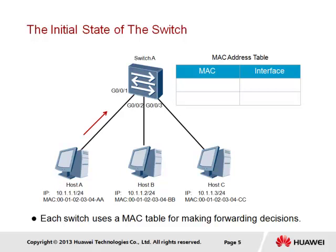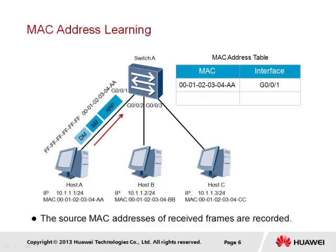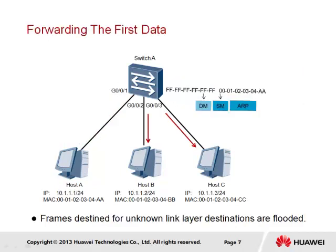Host A has begun to forward a frame heading for switch A. The frame that has been broadcast is an ARP request, identifiable due to the frame header containing a broadcast address in the destination MAC field, and by the ARP header carried by the frame. The source MAC address of the frame is that of host A, and it is this MAC address that is used by switch A. Using the source MAC address and the interface on which the frame was received — interface Gigabit Ethernet 0-0-1 — switch A is able to record the path via which host A is reachable. Any frame in future destined for the MAC address of host A shall be forwarded via interface Gigabit Ethernet 0-0-1. Since switch A has received a frame with a broadcast address as the destination MAC, the switch is obliged to forward the frame via all interfaces, with exception to the interface on which the frame was received.